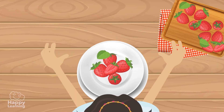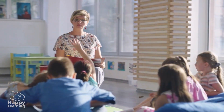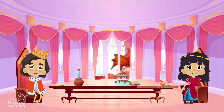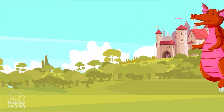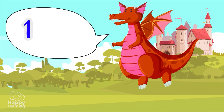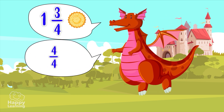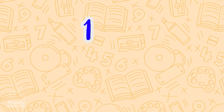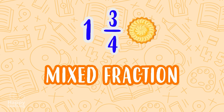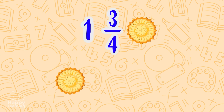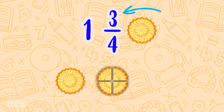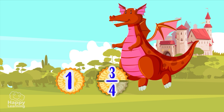How complicated these kings are! Thank goodness they are from a fairytale! The kings have a very friendly dragon as a pet. The dragon also wants breakfast, and he asks for one and three quarters of an apple pie and four quarters of a chocolate cake. One and three quarters of an apple pie is a mixed fraction — that is to say, a whole pie, and another pie of the same size but divided into four parts, of which we take three. There you go, dragon. One and three quarters of an apple pie.